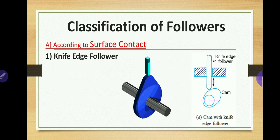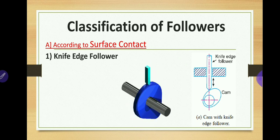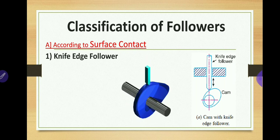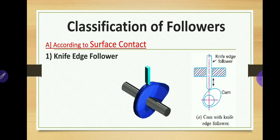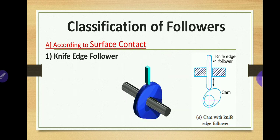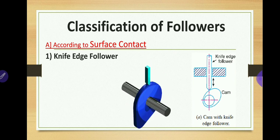The first type according to surface contact is the knife edge follower. When the contacting end of the follower has a sharp knife edge, it is called a knife edge follower. As you can observe in the animation and diagram, the contacting end is a sharp knife edge, and there is point contact between this edge and the cam. There is a sliding motion between these contacting surfaces, which causes a larger, excessive amount of wear. Therefore knife edge followers are less used in actual applications.